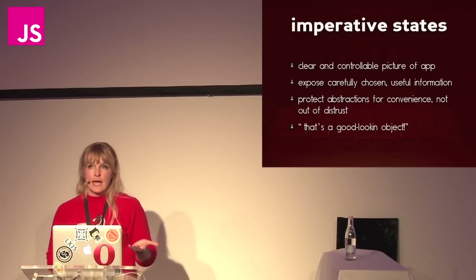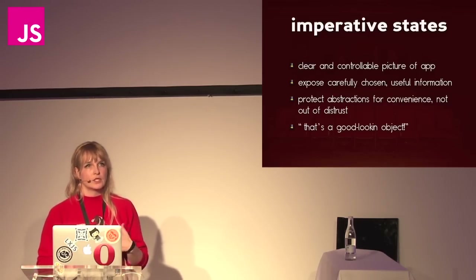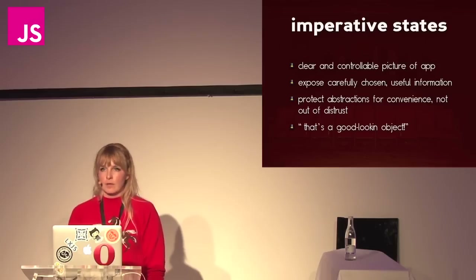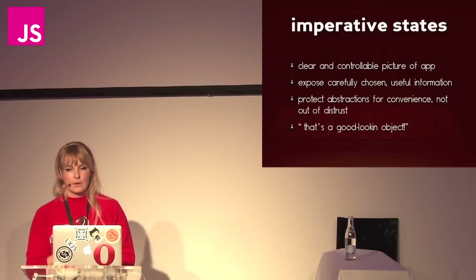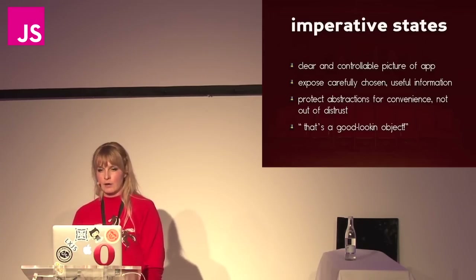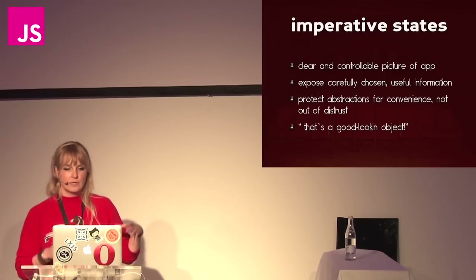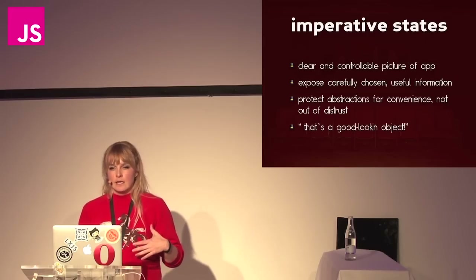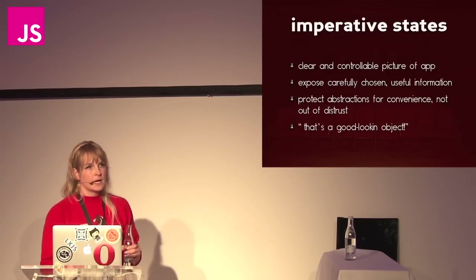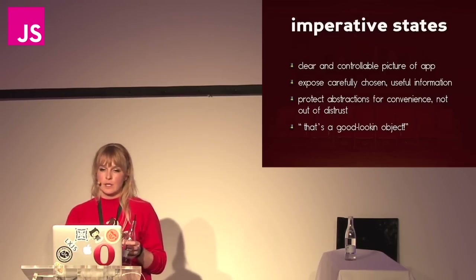Imperative states: we want to have a clear picture of the app that we can control at all points, including all the objects within it. It's good to have access to curated information — as much as makes sense, not a bunch of private variables that aren't really private and that you don't need. Creating a good, useful state avoids situations where changing something in one place has effects in other places. You sandbox things and keep them separate from each other, getting clear pictures of everything you're working with. Because once people start using your code, they want to feel like what they've created is a good-looking object that does what they want.